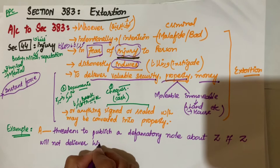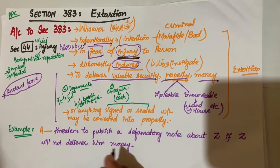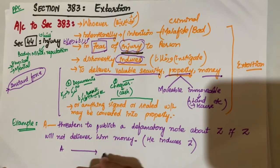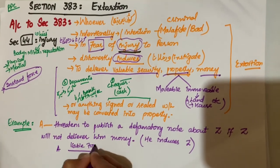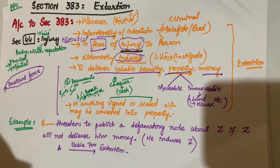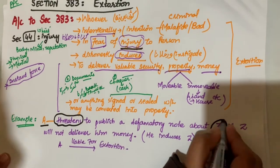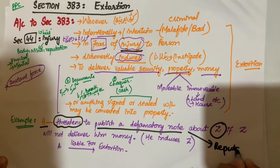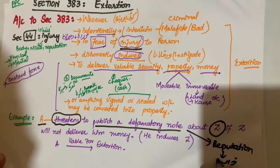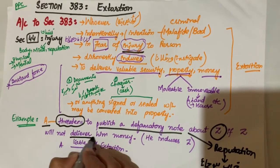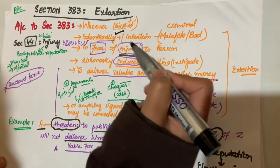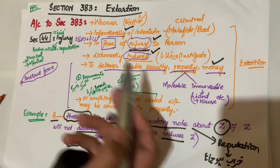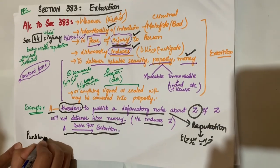Ke wo us ke khilaf ek defamatory note jo hai wo publish karega. Defamatory note publish karne se kya hoga ke Z ki reputation sab ke samne kharab ho jayegi. Aur usne usko threat kiya kis wajah se - jab tak wo Z ko, Z usse koi bhi money ne jo hai wo use transfer nahi karega, jab tak Z usse money transfer nahi karega, wo us ke khilaf defamatory note publish kar dega. Ab yahan kya hua, usne Z ko induce kiya. To yahan A is liable for extortion.